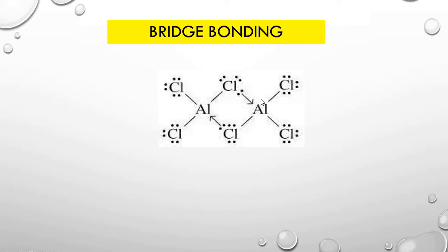In AlCl₃, when two AlCl₃ molecules exist in the form of a dimer, the chlorine atom has a complete valence shell, but aluminum has an incomplete valence shell with only six electrons — aluminum is electron deficient. Similarly, in the other AlCl₃ molecule, aluminum is also electron deficient. When these two AlCl₃ molecules form a dimer, a lone pair of electrons from chlorine is donated to aluminum to form a coordinate covalent bond.